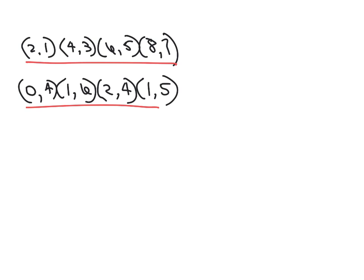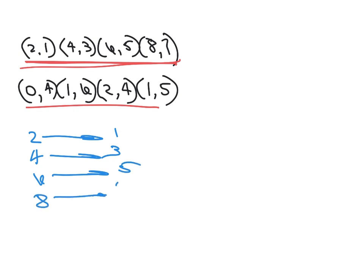So just real quick, let's do this in a map. A map says if we have a 2, it goes to the 1. 4 goes to the 3, 6 goes to the 5, and 8 goes to the 7. Each one of our domains maps to one of our y's, one of our range. So let's look at this one. We have a 0, a 1, a 2, and because the 1 repeats there, we just don't even show it. We just show it one time. So a 0 maps to a 4. The 1 maps to a 6. The 2 maps to a 4. And this one maps to a 5.